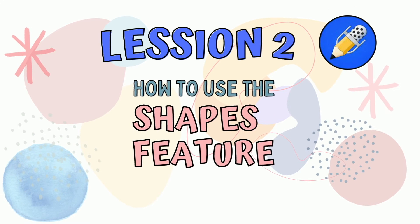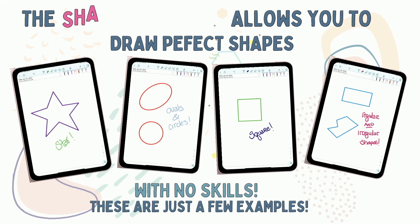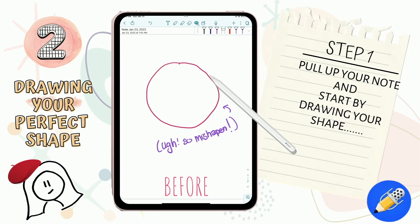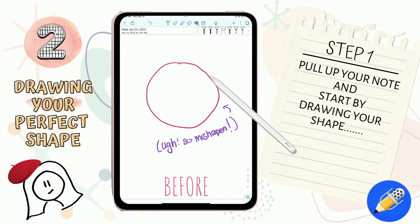Lesson number two: how to use Notability's special shapes feature. The shapes feature allows you to draw perfect shapes with no skills. Here are just a few examples of drawing your perfect shape.